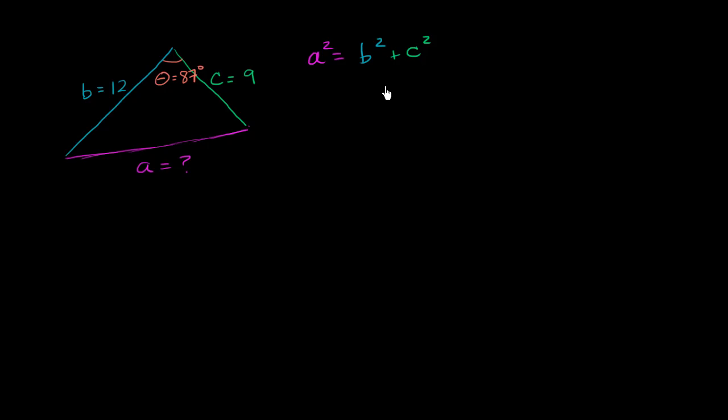But the law of cosines gives us an adjustment to the Pythagorean theorem so that we can do this for any arbitrary angle. So the law of cosines tells us that a squared is going to be b squared plus c squared minus 2 times bc times the cosine of theta.